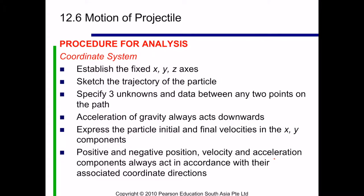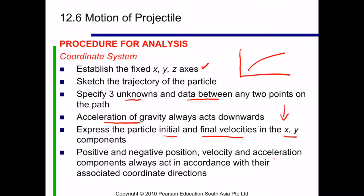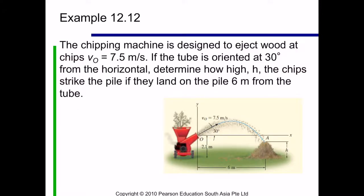In terms of analysis, first establish the fixed X, Y, and Z axes. Second, sketch the trajectory of the particle. Specify the unknowns and the data between any two points on the path. Remember the acceleration of gravity always acts downwards. Express the particle's initial and final velocity in XY components, being careful with positive and negative signs. Velocity and acceleration components always act in accordance with their associated coordinate directions.